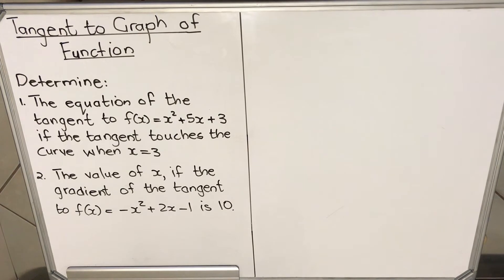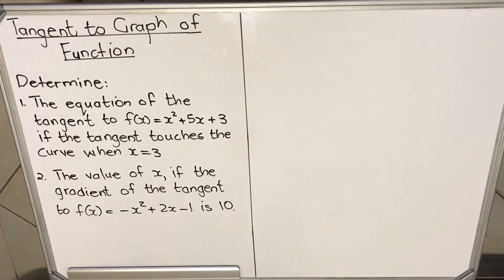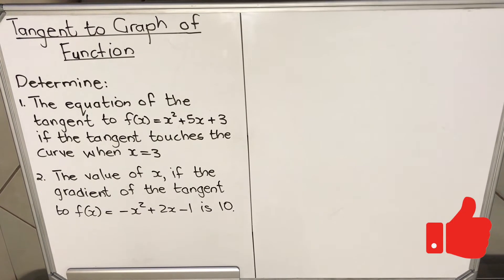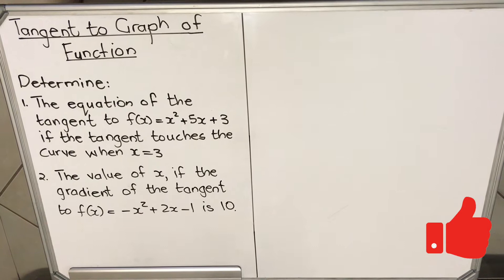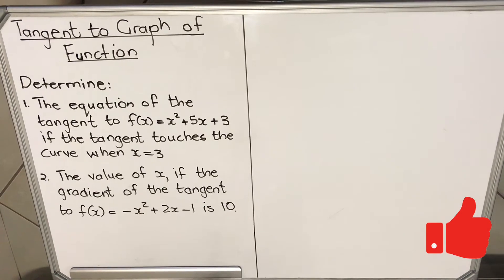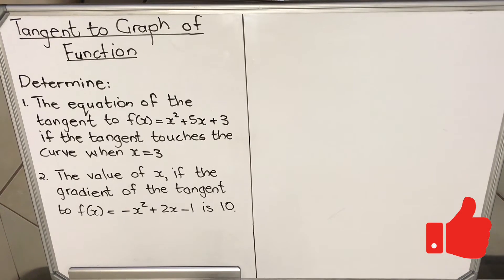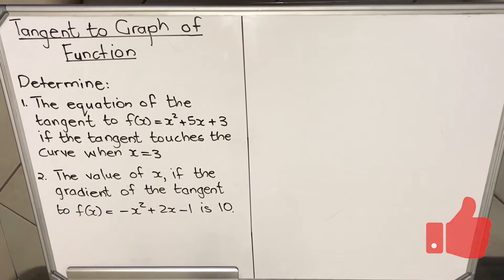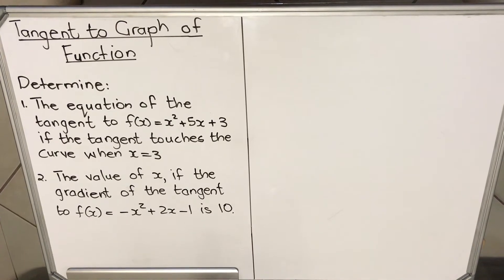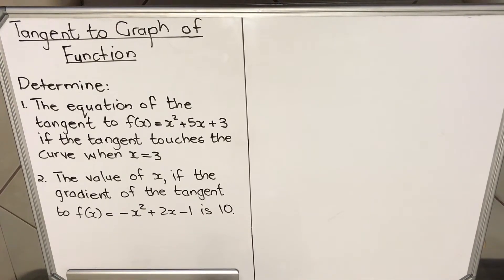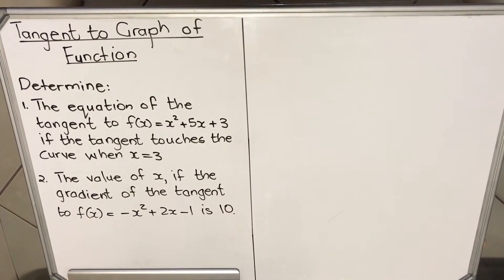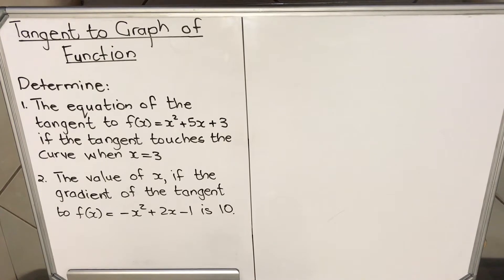This is a lesson where I'm going to show you how to find a tangent to a function. The first thing you need to remember is that a tangent is a straight line, so we're going to use the straight line equation because a tangent is a straight line. I have two examples here and I'm going to work through them to show you the concept.